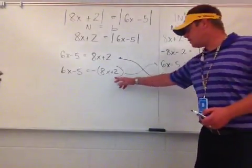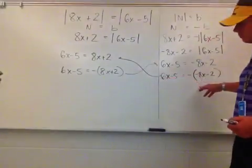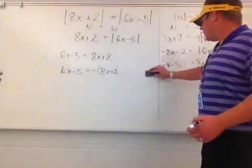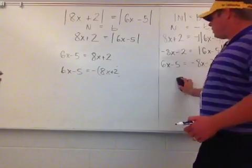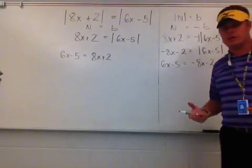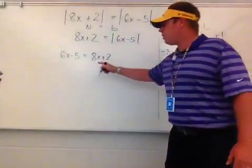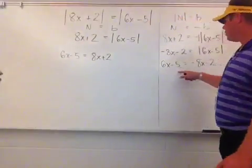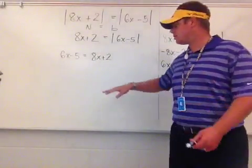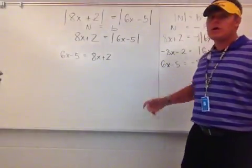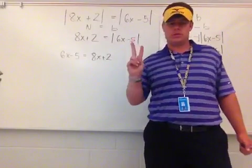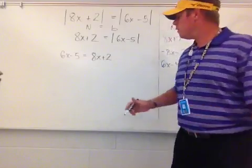So while I have four equations, a couple of them are the same. This will always occur for these particular types where I have an absolute value equal to an absolute value — though this could change if I put another number adding or subtracting outside the absolute value. What I really have are two equations: 6x minus 5 equals 8x plus 2, and 6x minus 5 equals negative 8x minus 2. It's important that you still create all four — it's a concept — but notice the repeats so you don't have to do so much work.